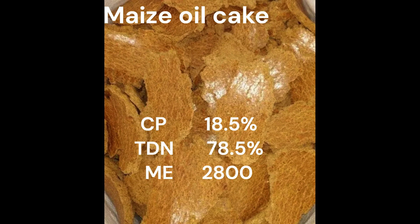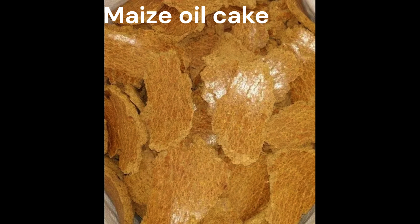Maize oil cake is rarely used in animal feed, but it still contains 18.5% crude protein, 78.5% total digestible nutrients, and metabolizable energy of 2,800.